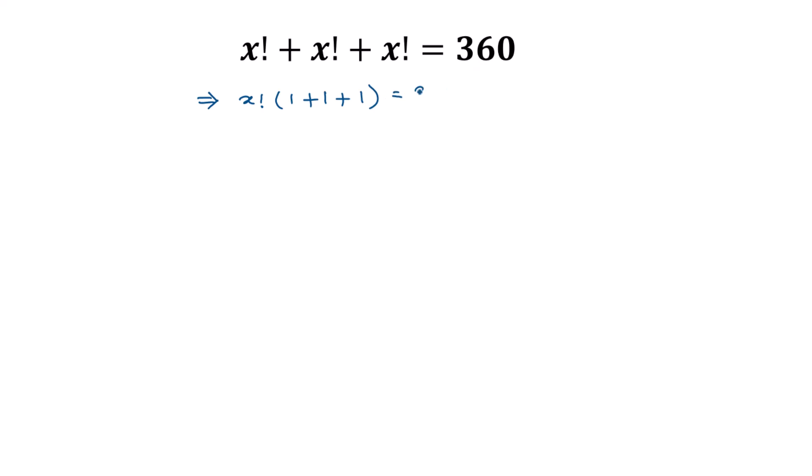Or x factorial times (one plus one plus one), this is three, is equal to the right side 360.